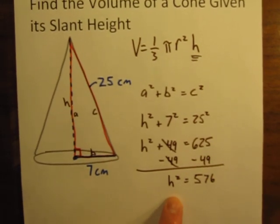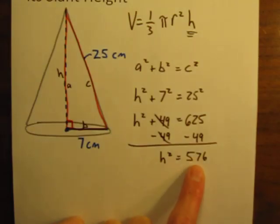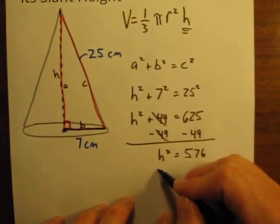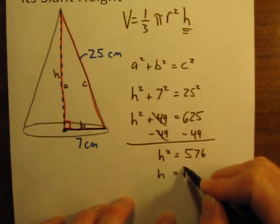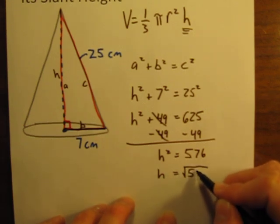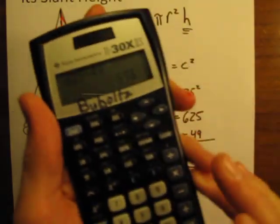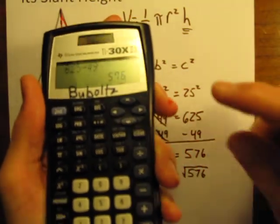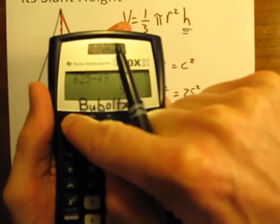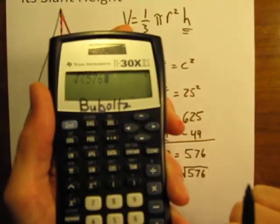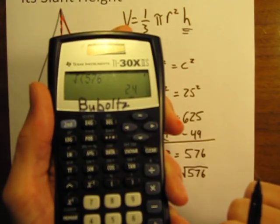And now we want to figure out what h is still. We have to know what h squared is equal to 576. But let's figure out what h is. So h is going to be equal to the square root of 576. And when we do that in our calculators, if I just do the square root of 576, we get 24.